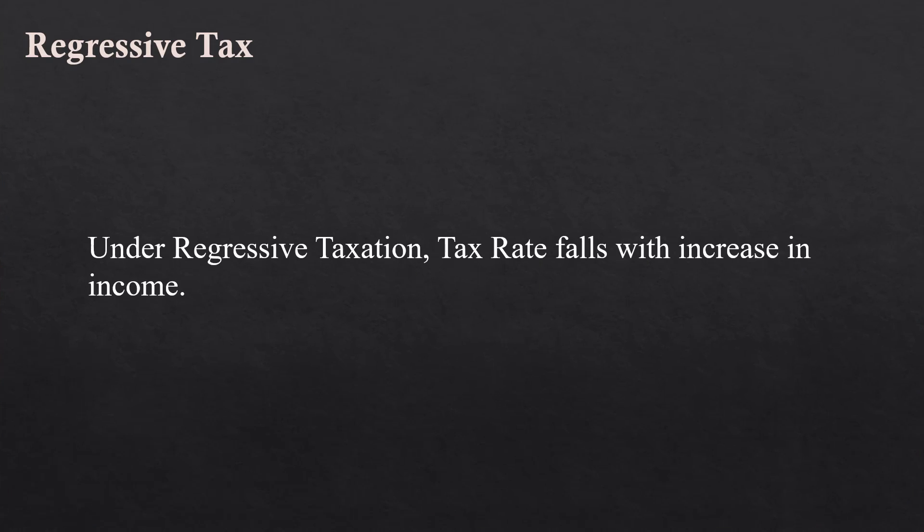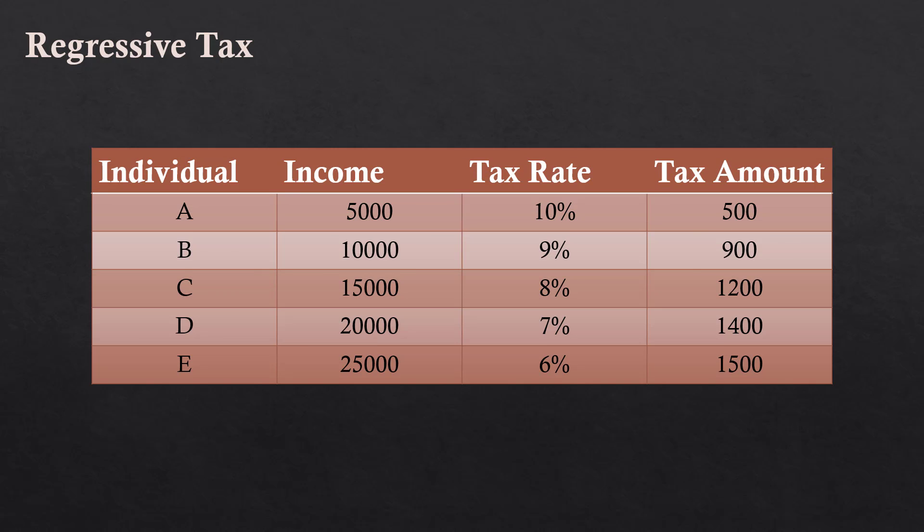Regressive taxation. Under this, tax rate falls with increase in income. This table illustrates regressive taxation. Relatively low income group is subjected to higher tax rate. 10% tax is levied on Rs. 5000 income. Whereas, 6% tax rate is applied on Rs. 25,000 income. Though the tax rate falls, the actual amount of tax to be paid by higher income group is more than the low income group.